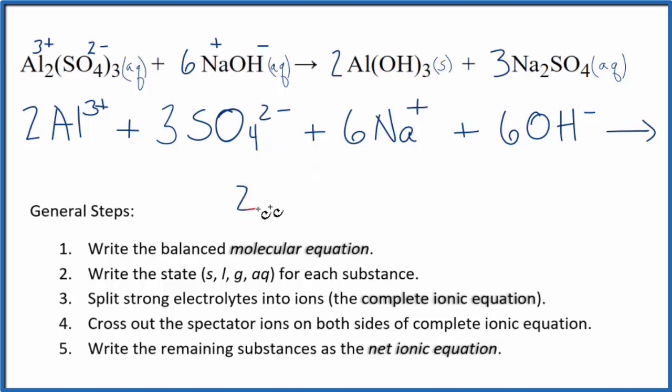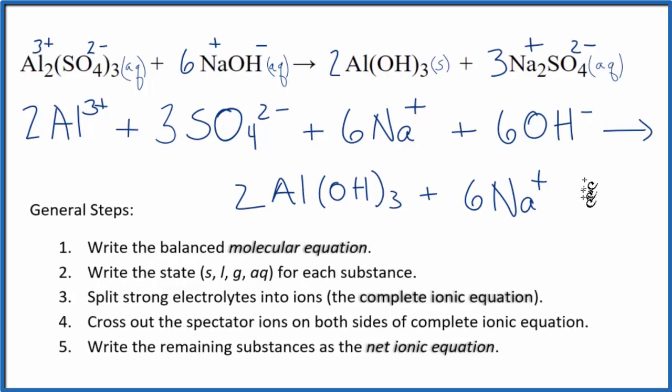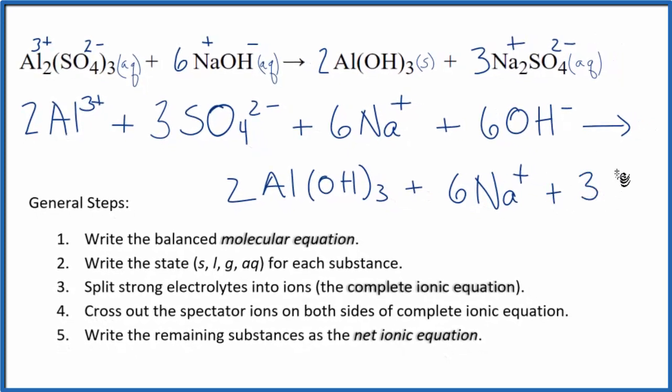We said sodium is plus, and this is sulfate 2 minus, plus 3 of the sulfate ions. So this is the total or complete ionic equation for Al2(SO4)3 plus NaOH.